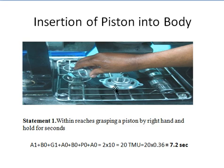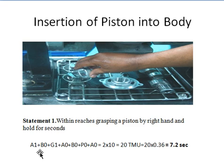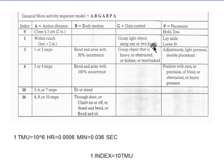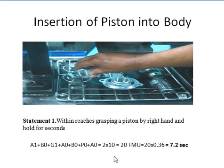For Statement 1 — within reach, grasping a piston — within reach the index is 1, so action distance A is 1. Body motion B is 0. For grasping a light object, the index is 1, so G is 1. The remaining variables (B, P, A) are all 0. So we have A1 and G1. Adding: 1 plus 1 equals 2. Multiplied by 10 (since 1 index equals 10 TMU), we get 20 TMU. Converting to seconds: 20 multiplied by 0.36 equals 7.2 seconds.